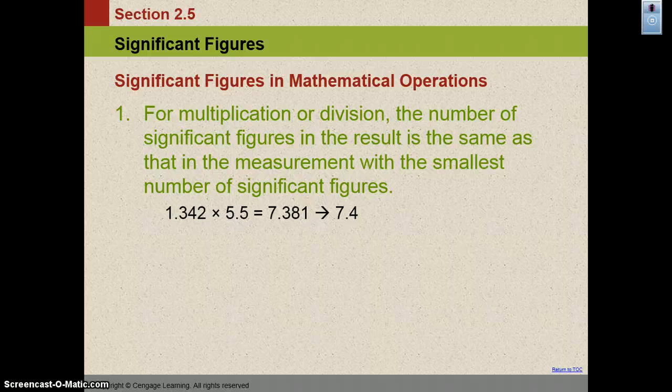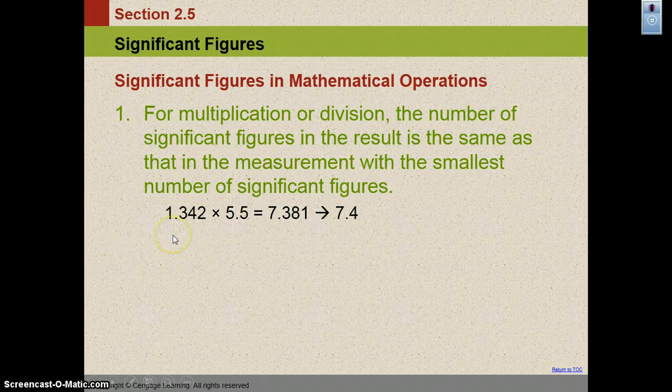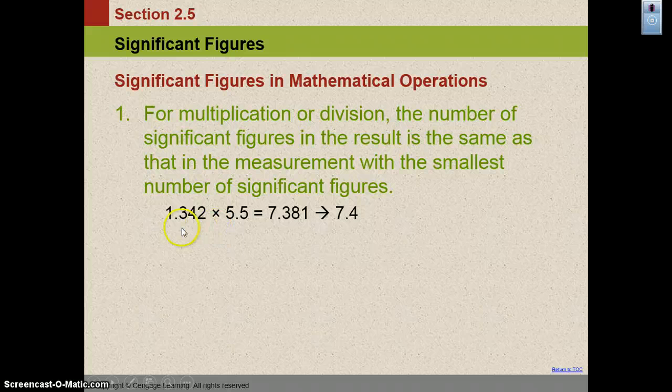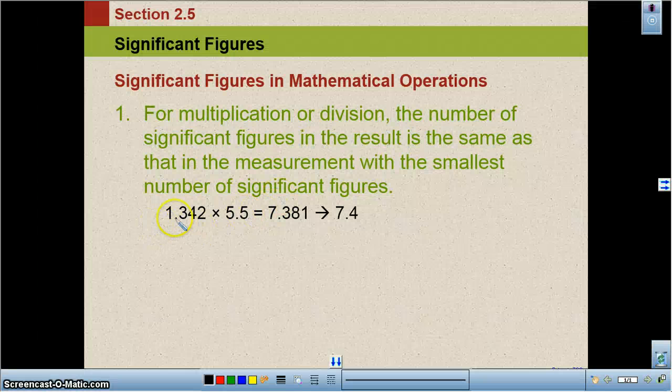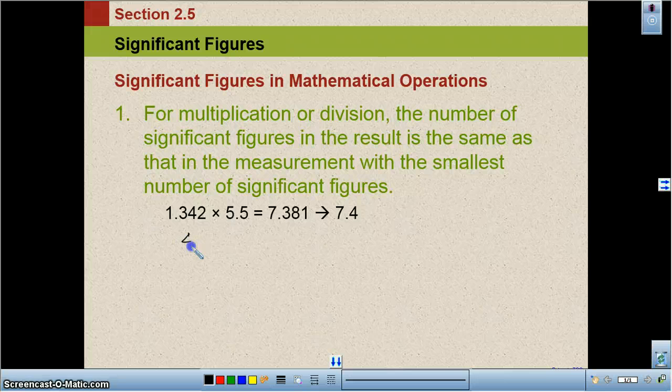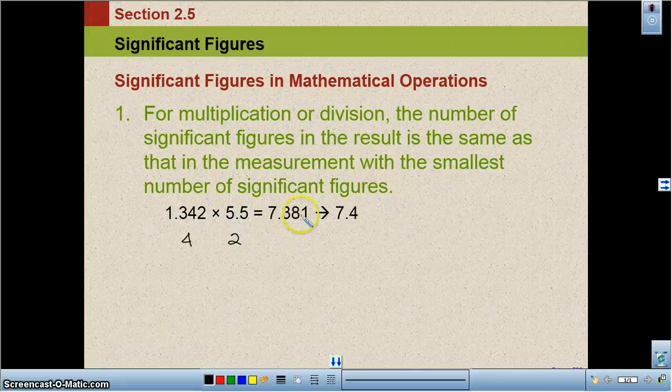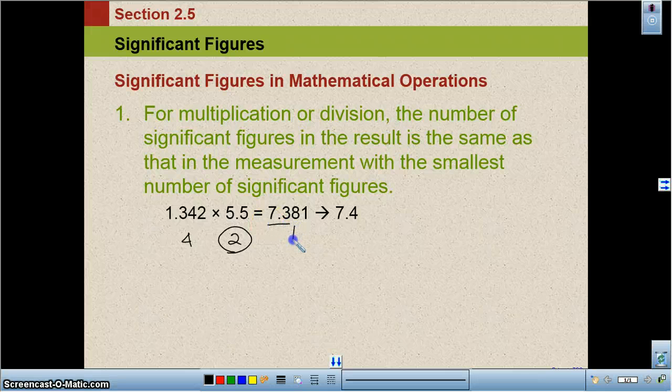For multiplication and division, our answer can only have as many significant figures as the least number of significant figures in our problem. So if we look at this problem, 1.342 times 5.5, 1.342 has four sig figs, 5.5 has two sig figs. So I put that in my calculator and what I come up with, exactly the numbers, all the numbers on display, 7.381. I can only keep two in my answer because it's the least number of sig figs in the problem. So I'm going to keep these two. I look at this one. Is it five or larger? Yes. So I'm going to round up and you get 7.4.